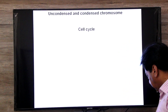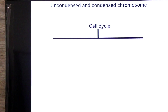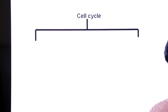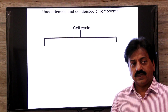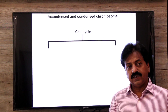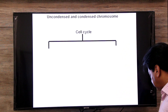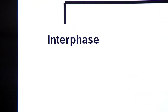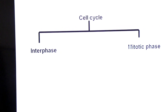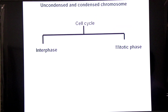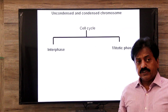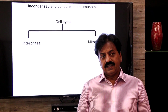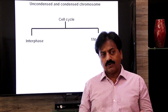Briefly summarizing the cell cycle: it has two phases — first, interphase, and second, the mitotic phase. All those changes which take place during cell growth and cell division are known as the cell cycle, which has these two stages or two phases.